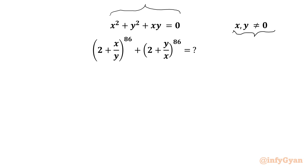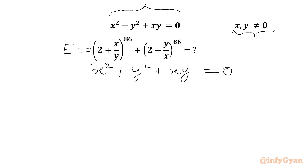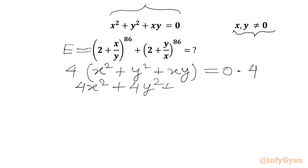Let us get started by considering the required expression equal to E. We write our known equation x² + y² + xy = 0. Now we will multiply this equation by 4 on both sides, giving us 4x² + 4y² + 4xy = 0.